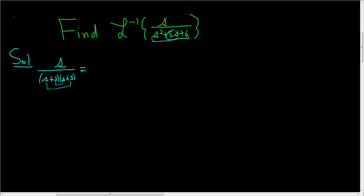So we have distinct linear factors, so this is a over s plus 2 plus b over s plus 3. And we're going to use what's called the cover-up method to find a and b. So let's find a first.